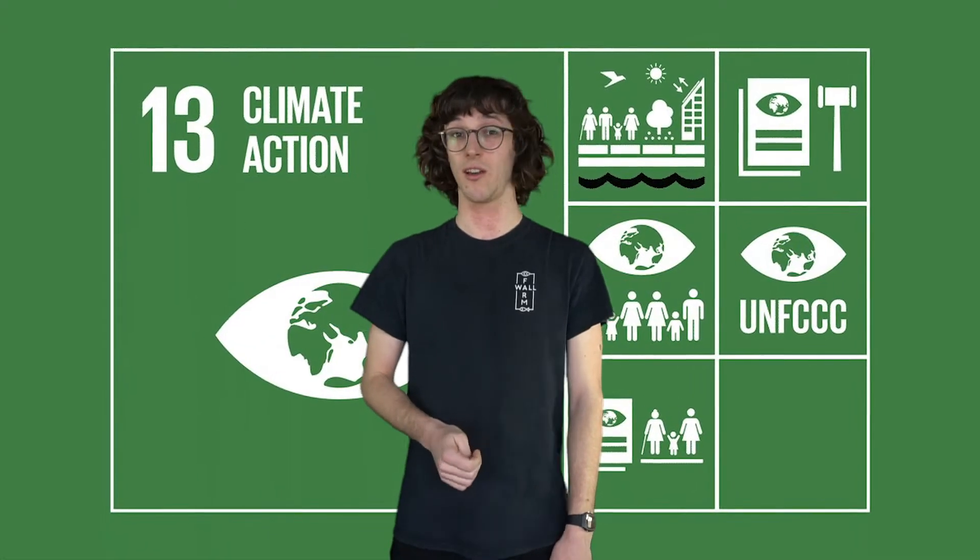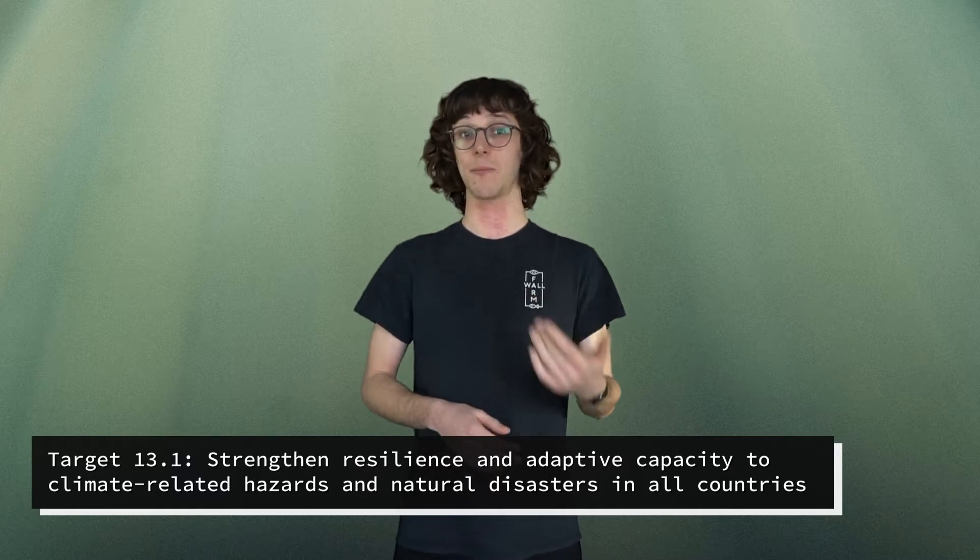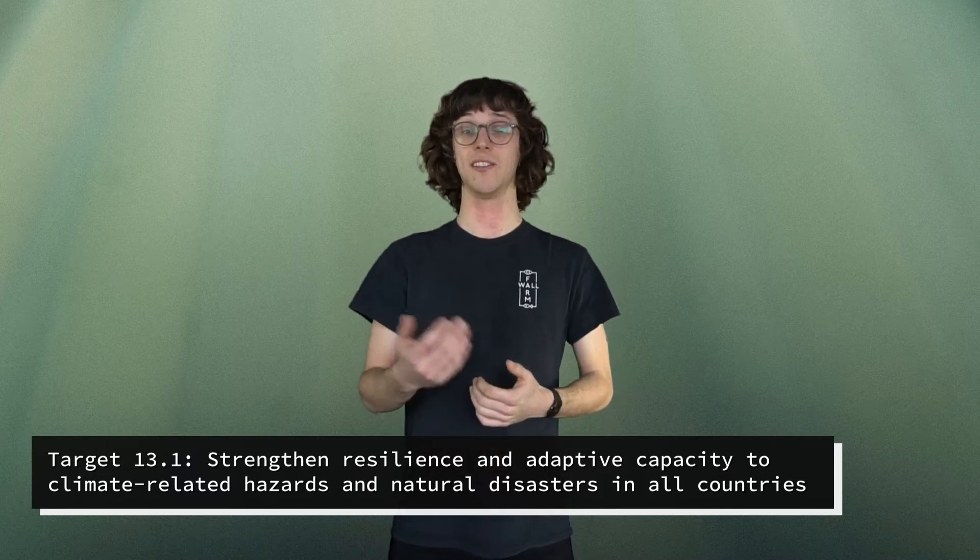So like I said, there are actually 17 of the SDGs and we're really interested today in number 13, which is all about combating climate change. In the words of the SDG it actually says, take urgent action to combat climate change and its impacts. Now there are five sub targets within SDG number 13, all related to this main objective of combating climate change. And the first target is particularly relevant to our discussion today about agriculture and urban farming. And this is what it says: Target 13.1, strengthen resilience and adaptive capacity to climate related hazards and natural disasters in all countries.